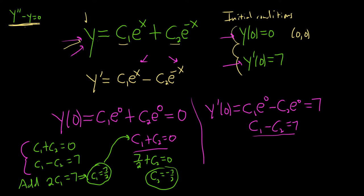So we have our c1 and c2, so all we do now is plug them back in. So our final answer will be 7 halves e to the x minus 7 halves e to the negative x. And that would be the final answer.